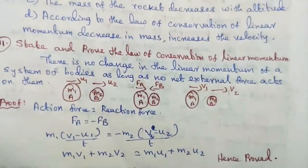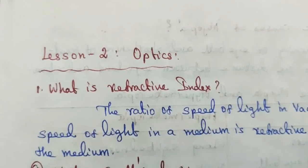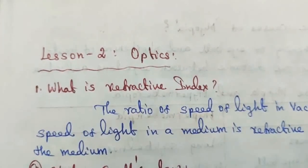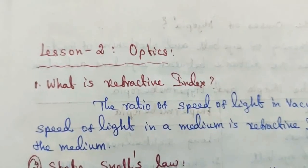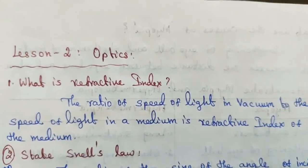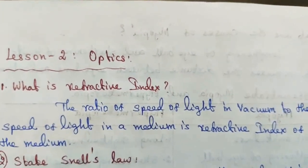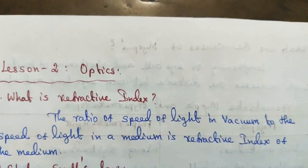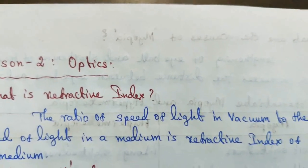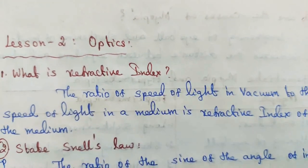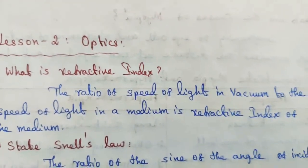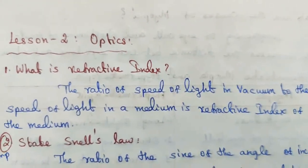Lesson 2: Optics. Question number one: what is refractive index? The ratio of the speed of light in vacuum to the speed of light in a medium is the refractive index of the medium.